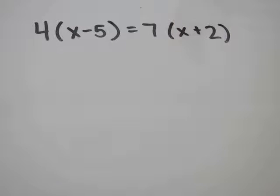Problem 21, 4 times x minus 5 equals 7 times x plus 2.